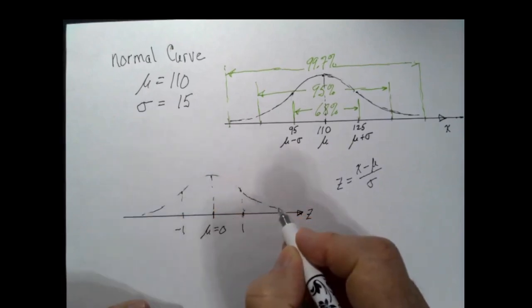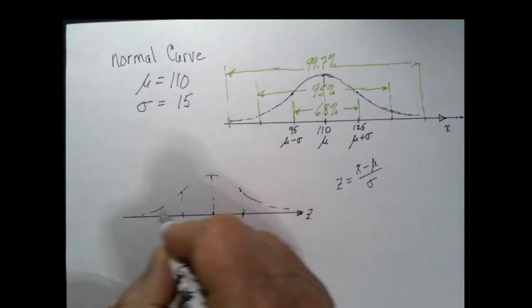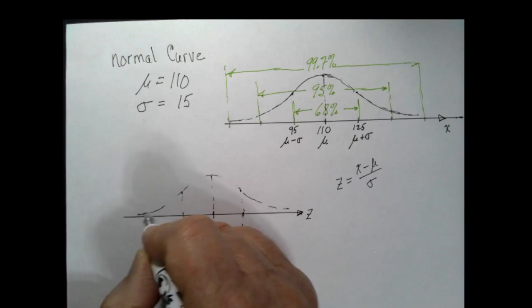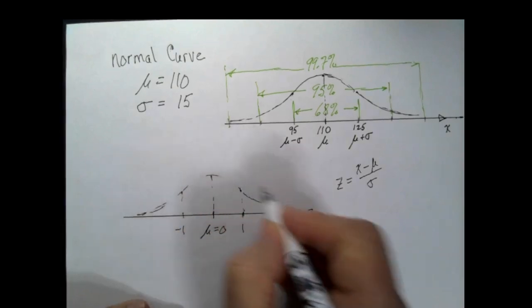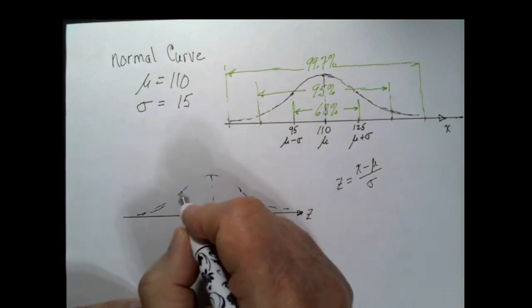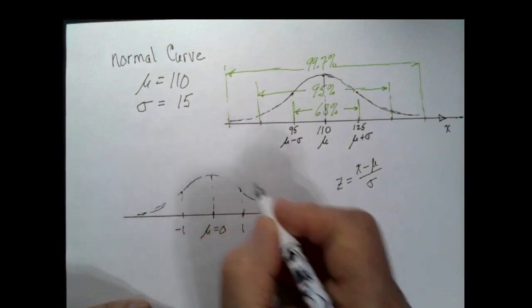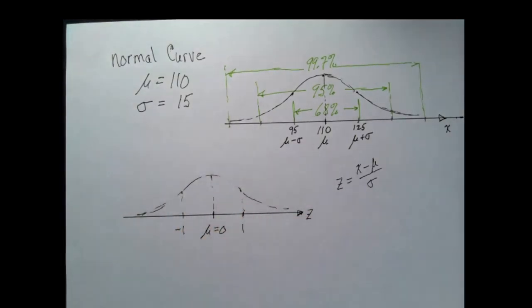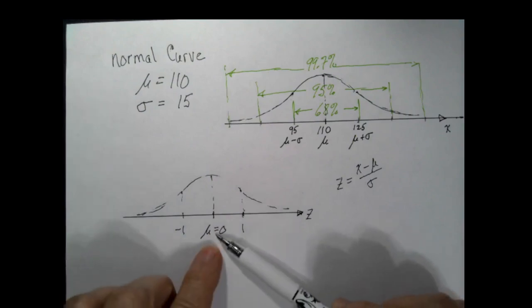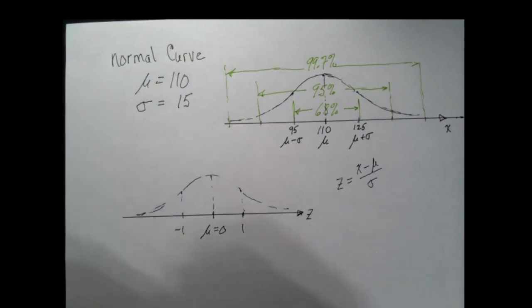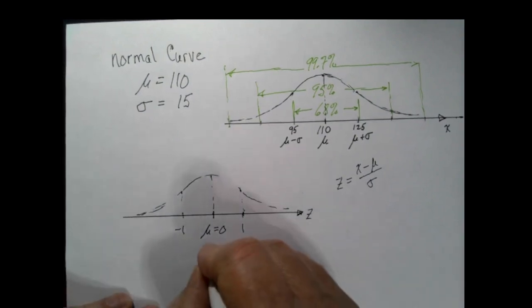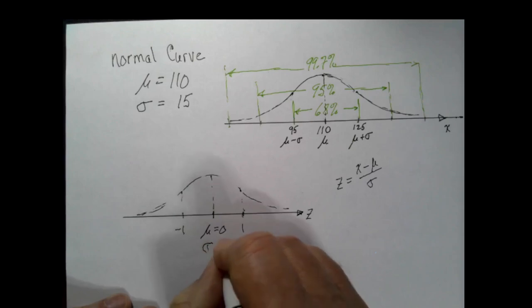Often we're going to be interested in converting a normal curve to a standard normal curve and doing our calculations in a standard normal curve. Standard normal curves have a mean of zero and a standard deviation of one.